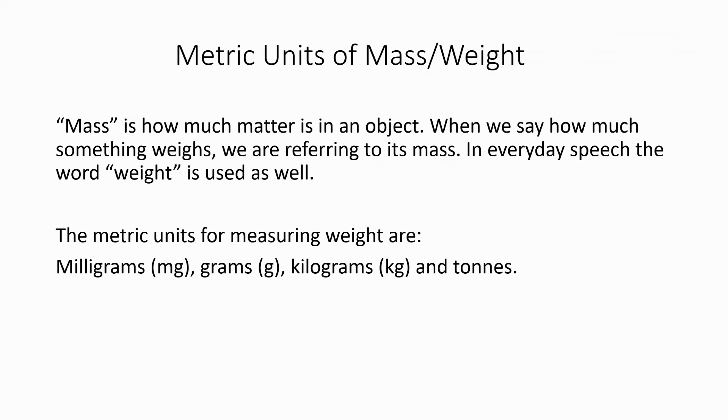The amount of mass in an object is how much stuff is in the object. In everyday speech we'll call it weight, but there's actually a difference between those two terms. So the metric units for measuring mass, or as we probably say weight, are milligrams, grams, kilograms, and metric tons.